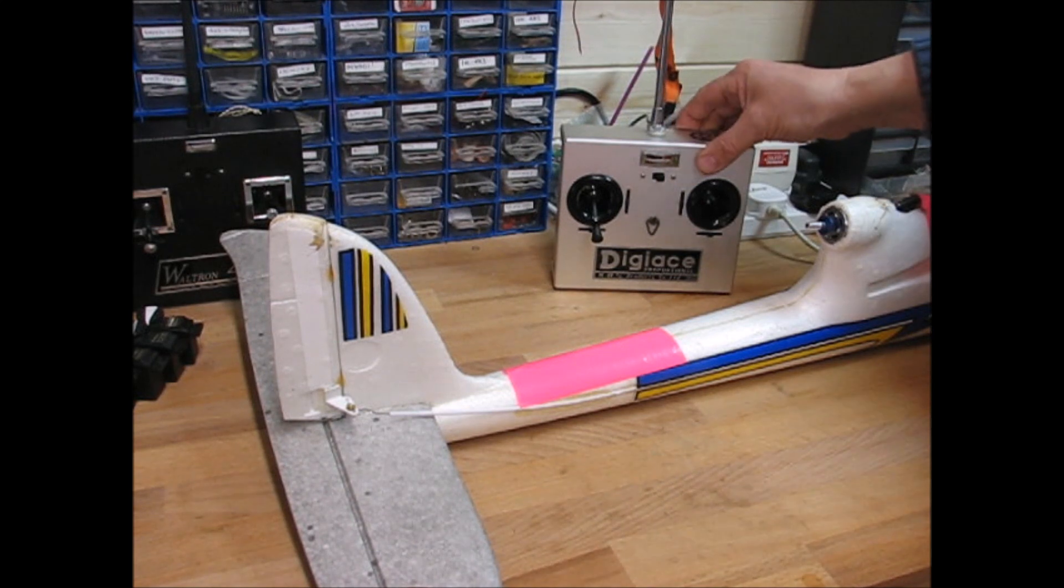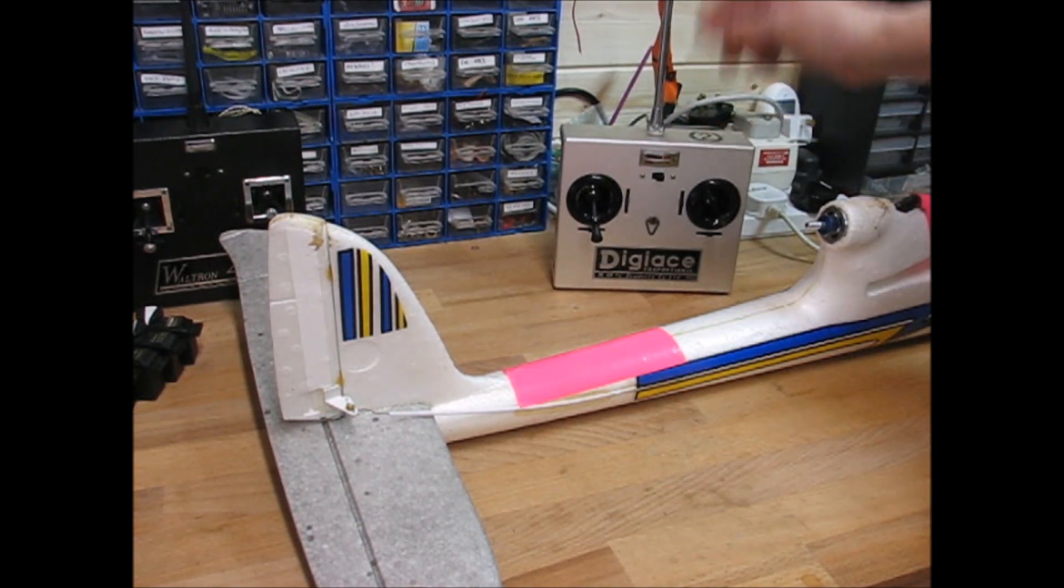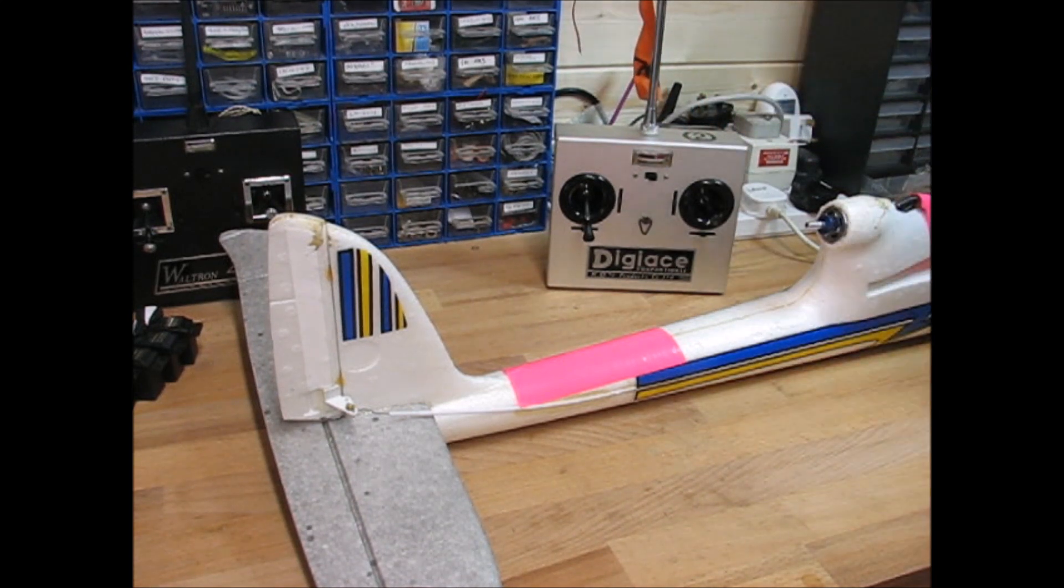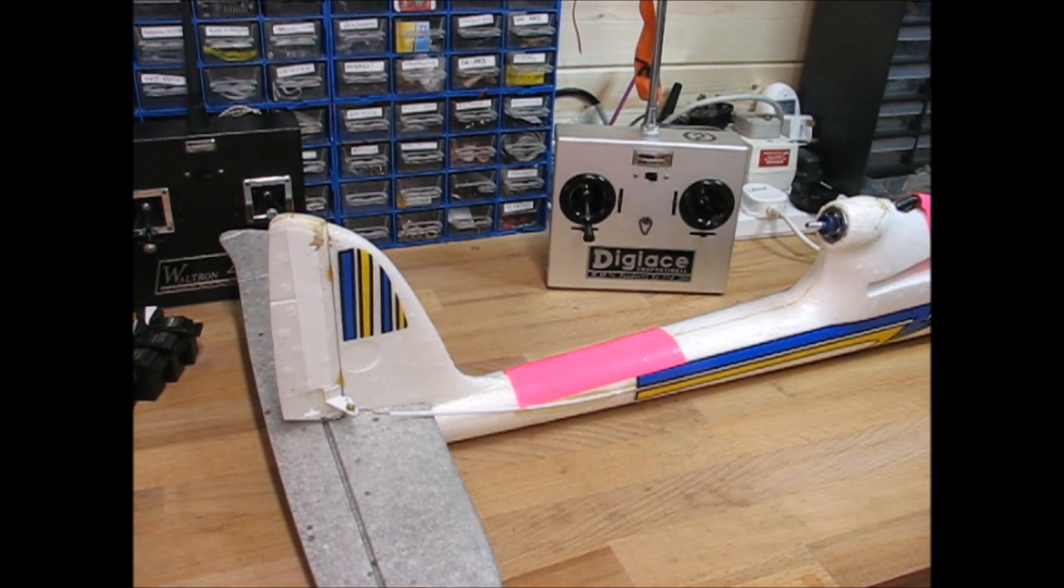So this DigiAce is converted, it's on 35 megs actually. This is converted using one of these DigiSpark 4-channel encoders. It's in my EasyStar which is just three channels, but it will do to demonstrate.